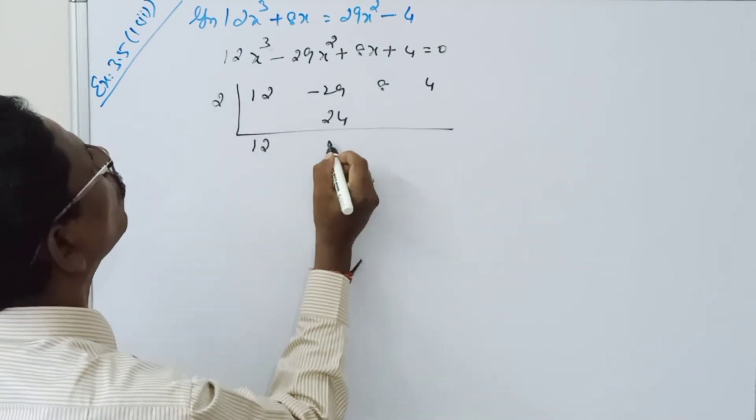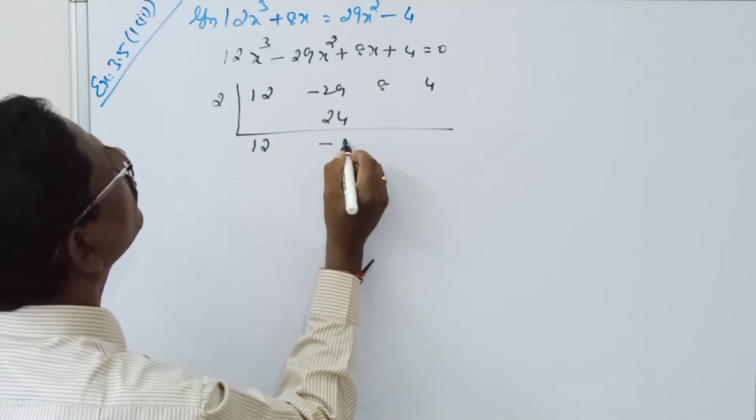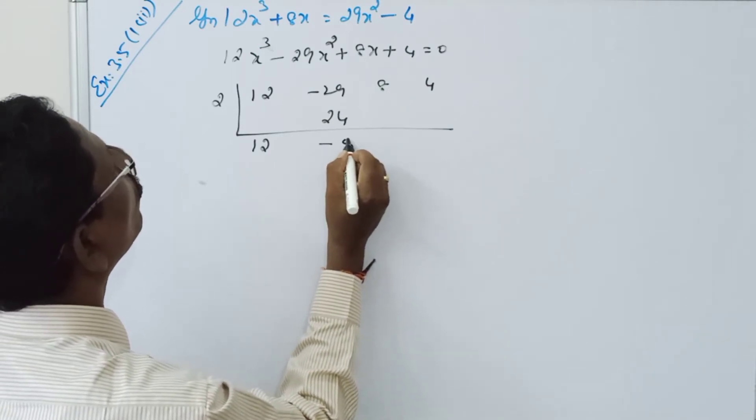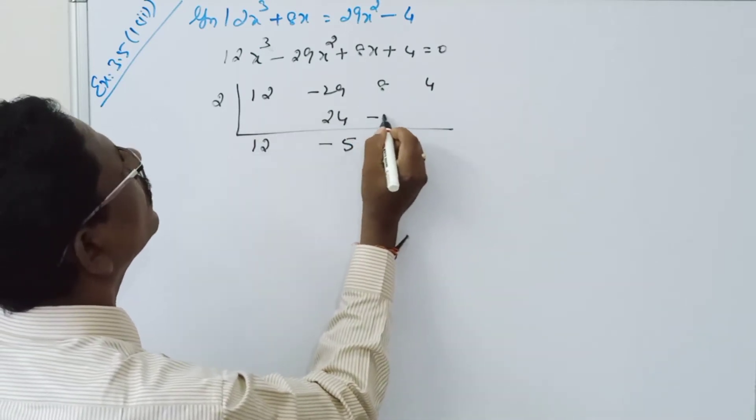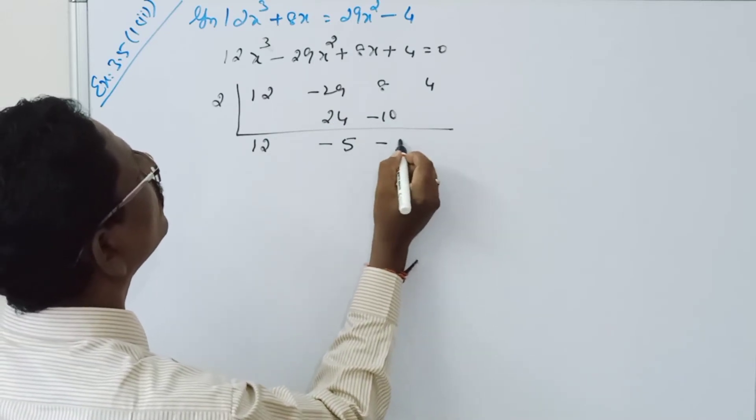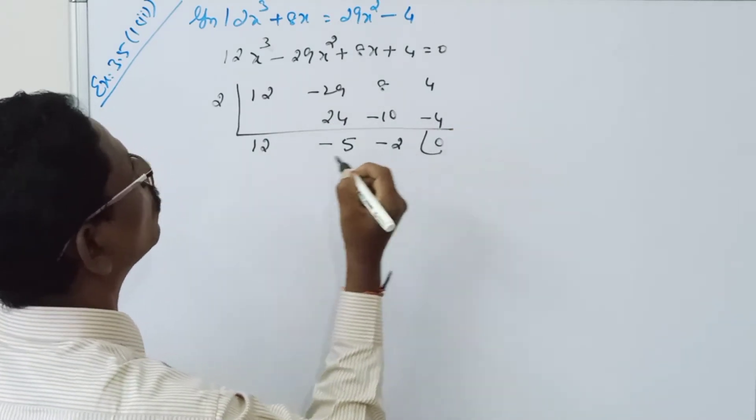24 minus 5, minus 10. So here it is minus 2, minus 4, 0.